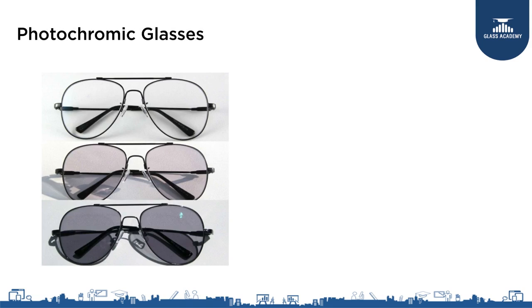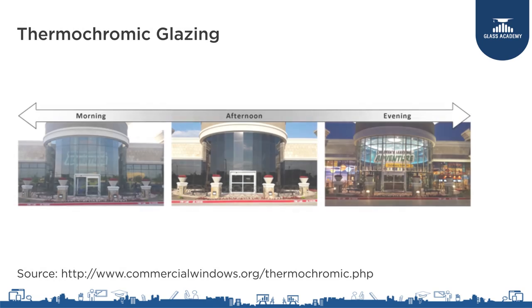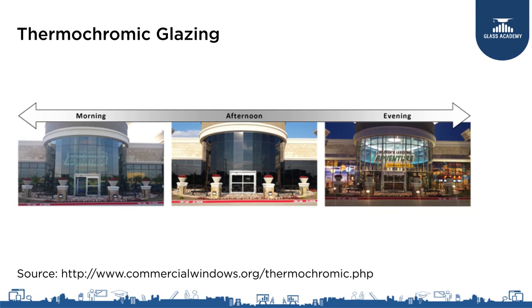Let us see a simple example — photochromic glasses. These glasses are special in the sense that when you go outdoors and expose them to solar radiation they become dark, and when you are indoors they become more transparent. These glasses automatically change their visible transmittance based on the solar energy falling onto the glass — they are called photochromic glass because this change happens due to the photons striking the glass. Another kind is thermochromic glass, where transmittivity changes because of temperature. In the morning the glass is reasonably transparent, in the afternoon it is very dark, and at night it becomes very clear — automatically changing transmittivity based on temperature.